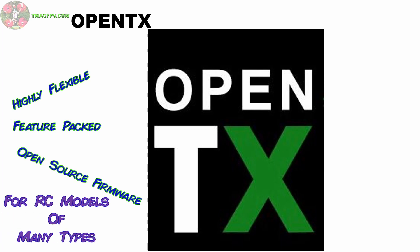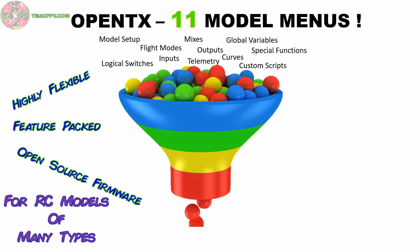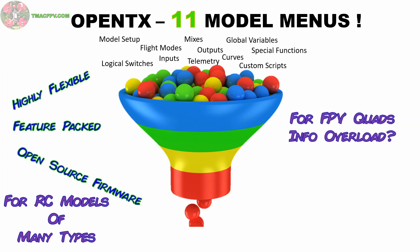Because it's designed with that flexibility and all those features for many types of RC models, it has 11 different model menus. It's sort of like candy — candy's good and so is the flexibility within OpenTX, but if you try to eat a bunch of candy all at once, you might get sick. In our case, for FPV quads, we may get information overload. We don't really need to use all those features — we really only need to use five of them.